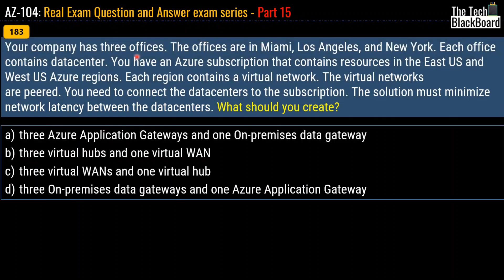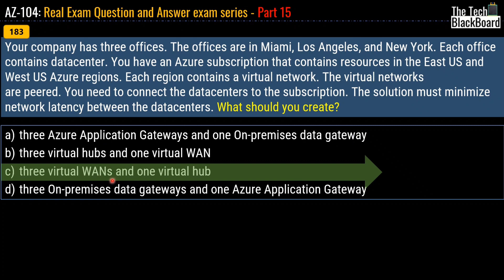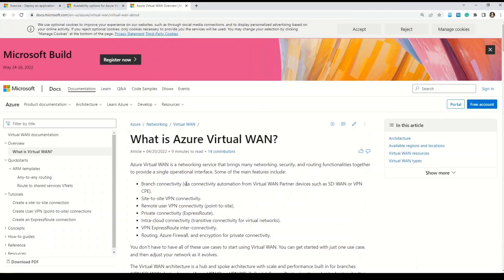Question 183: Your company has three offices in Miami, Los Angeles, and New York, each containing a data center. You have an Azure subscription with resources in East US and West US regions, each containing a virtual network — the virtual networks are paired. You need to connect the data centers to the subscription and minimize network latency between data centers. The correct answer is option C: three virtual WANs and one virtual hub. Microsoft documentation on Virtual WAN is linked in the description box.